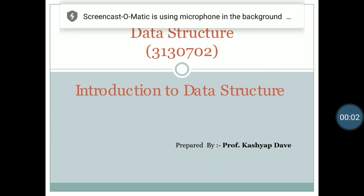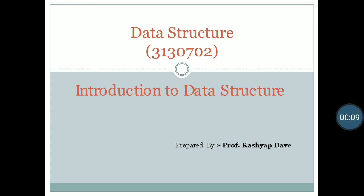Good morning students, welcome to the next video lecture of data structure. In previous videos we have discussed the basic meaning of data, meaning of structure, what is data structure, and which types of data structures are available — primitive data structures and non-primitive data structures. Primitive data structures have different data types like integer, float, character, double, and pointer. Non-primitive data structures are user-defined data structures like array, stack, queue, tree, graph, etc.